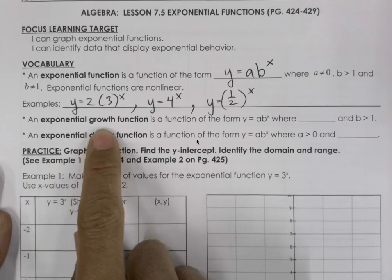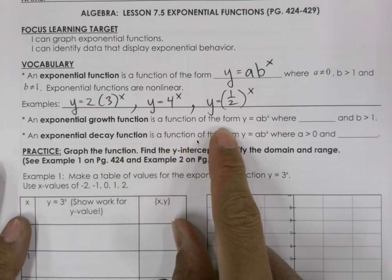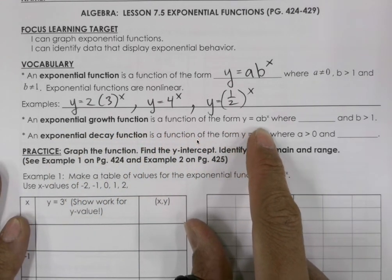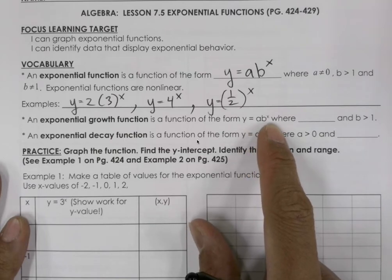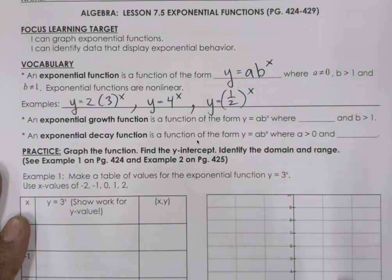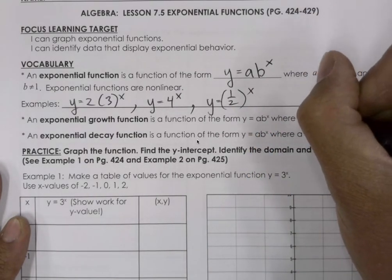Exponential growth function is a function of the form y equals a times b to the power of x, where a is greater than 0.